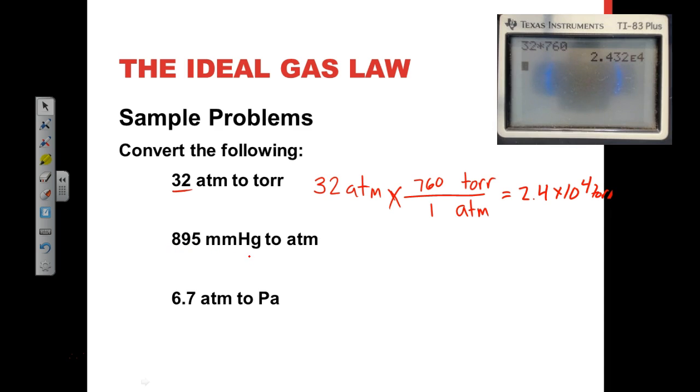Now, 895 millimeters of mercury to atmospheres. So we set up the problem just the same. Take the number that we're trying to convert, 895 millimeters of mercury, times, and we put millimeters of mercury on the bottom, and an atmosphere on the top. You have written down somewhere the conversion factor, so you know that one atmosphere is 760 millimeters of mercury, and so again, we put this in our calculator, 895. We don't have to multiply by one, but we're going to divide by 760, and when we do that, we get one point, and there's three sig figs, so we're going to do 1.18 atmospheres. The symbol for atmospheres is atm.